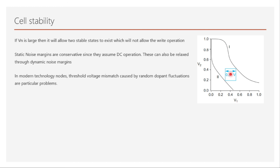In modern technology nodes, threshold voltage mismatch caused by random dopant fluctuation is a significant problem. With billions of transistors present, the threshold voltage changes across devices, creating variations in noise margin — impacting read margin, write margin, and hold margin. If the threshold voltage goes negative or falls below what it should be, the cell will definitely be inoperable.